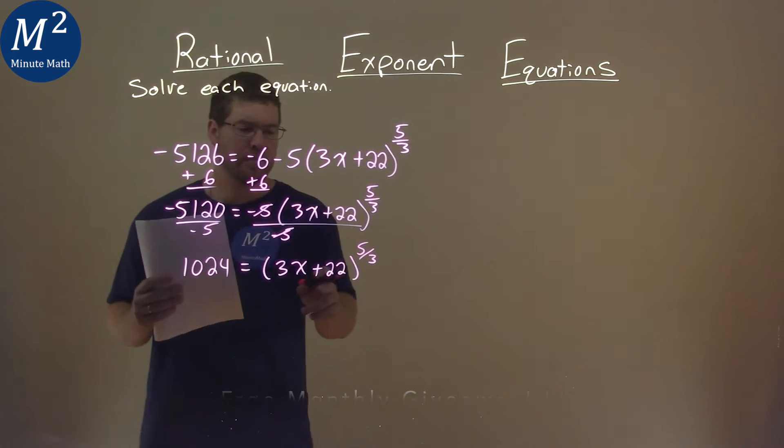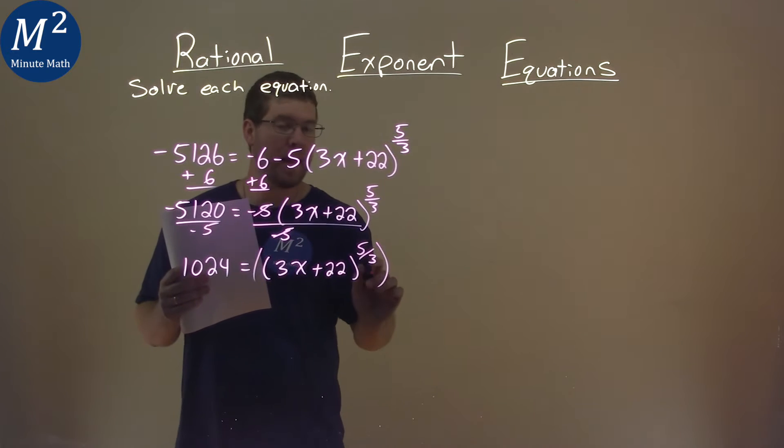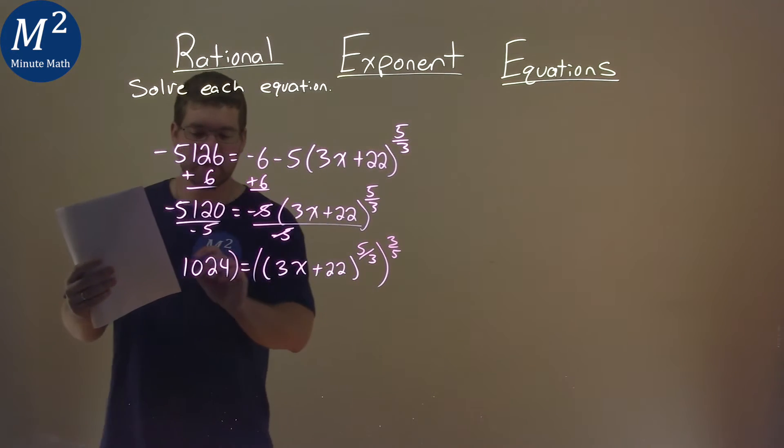Now we have to use our rule of exponents. If we take all of that and raise it to the 3/5 power, we're going to eliminate that exponent.